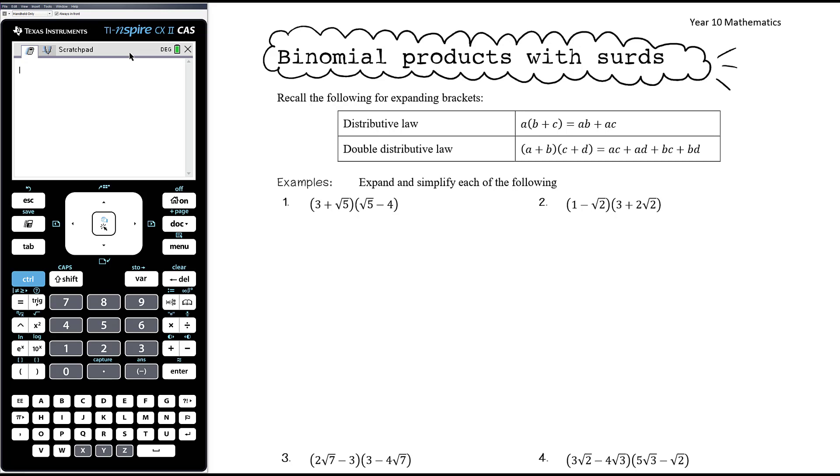Okay, so in our previous video we expanded out some simple brackets involving surds, that was using the distributive law, a number, or in our case a surd which is a number, times a bracket with two numbers. So we know that to expand that out, a times b plus a times c.